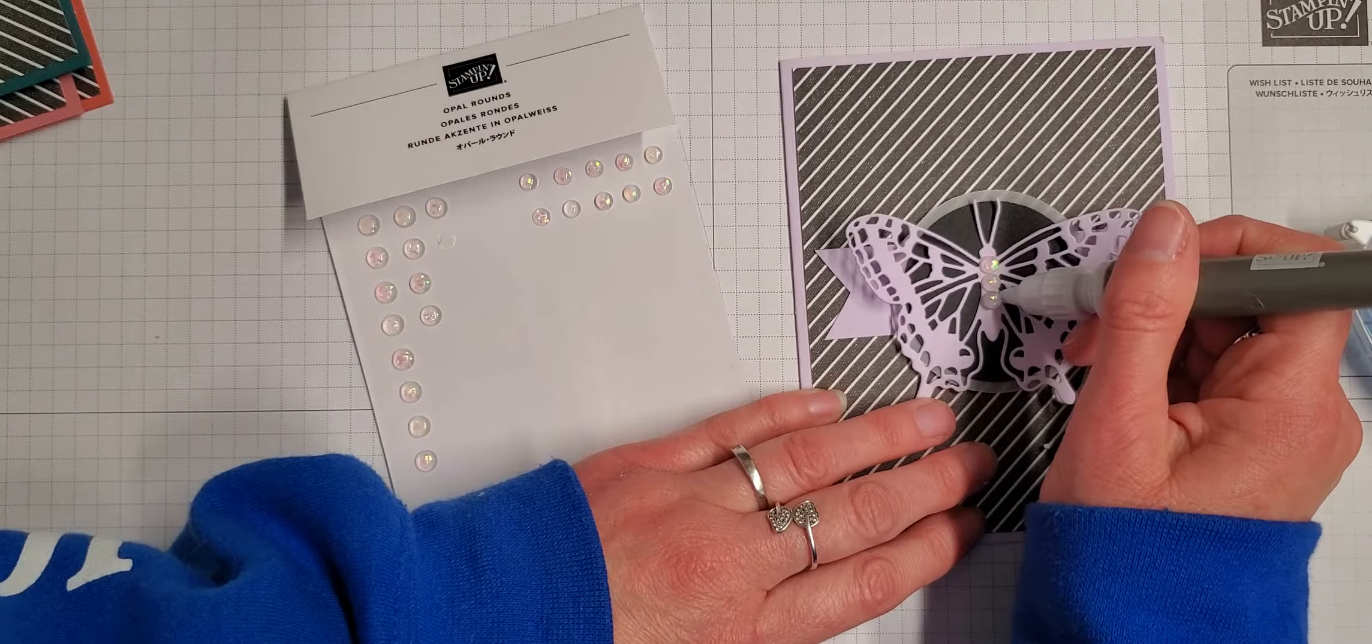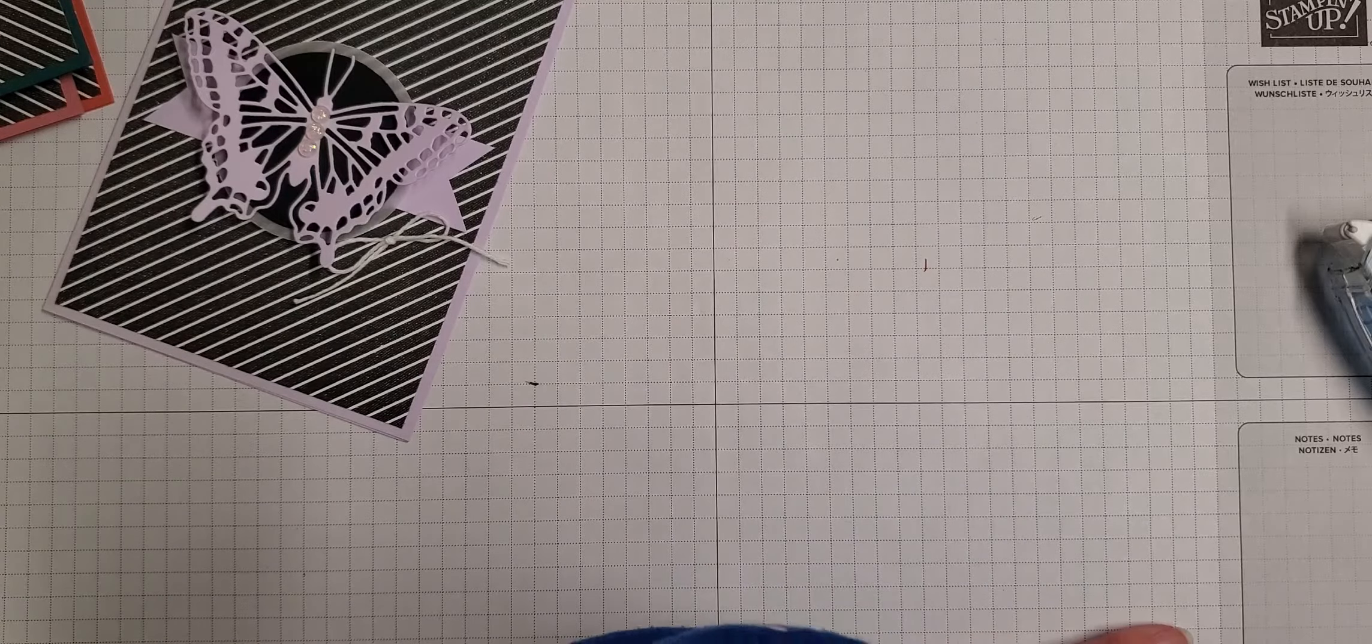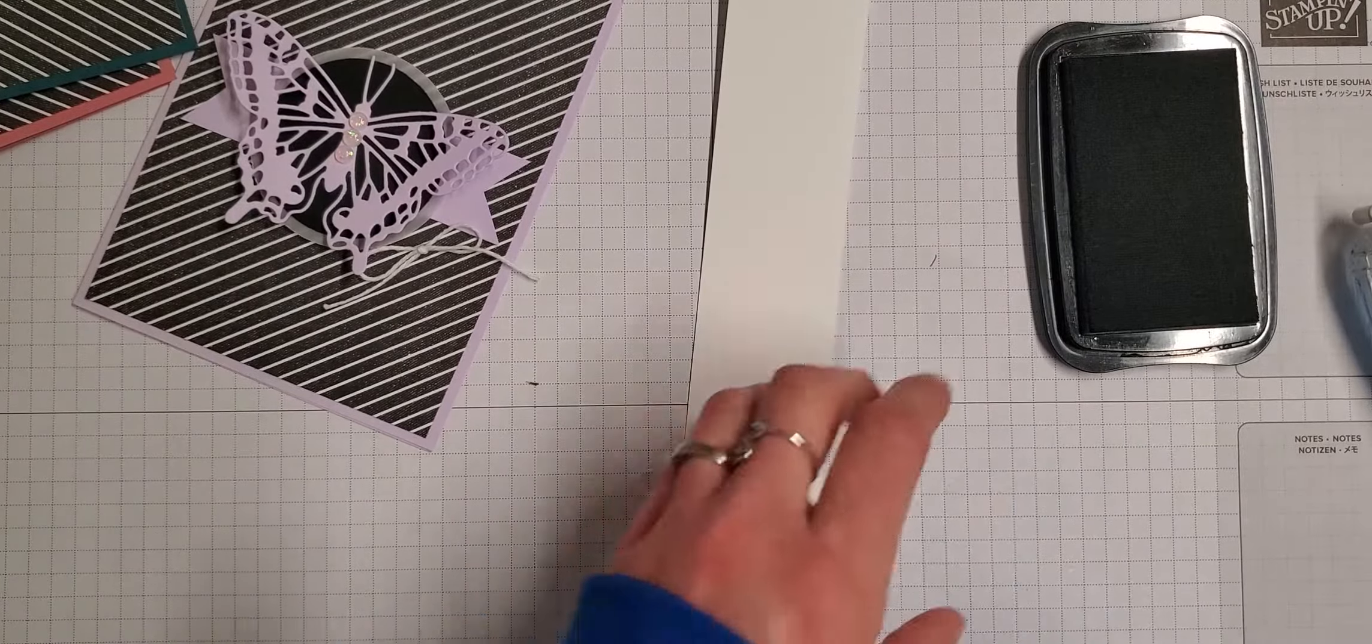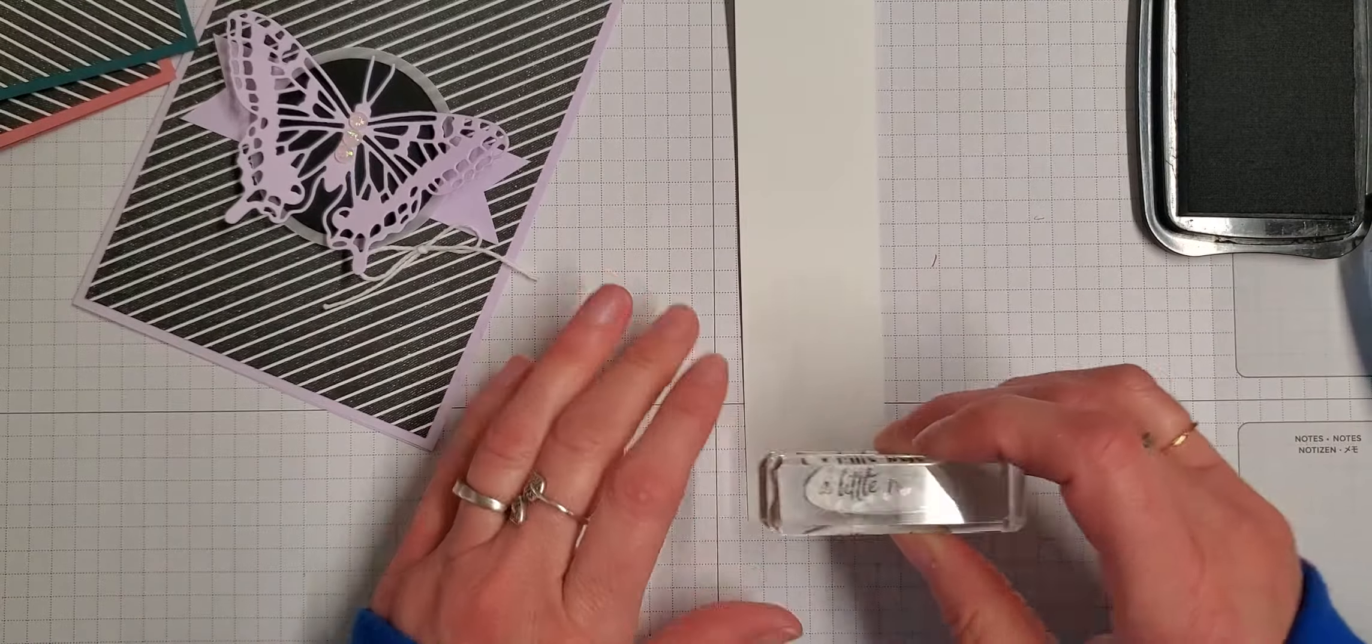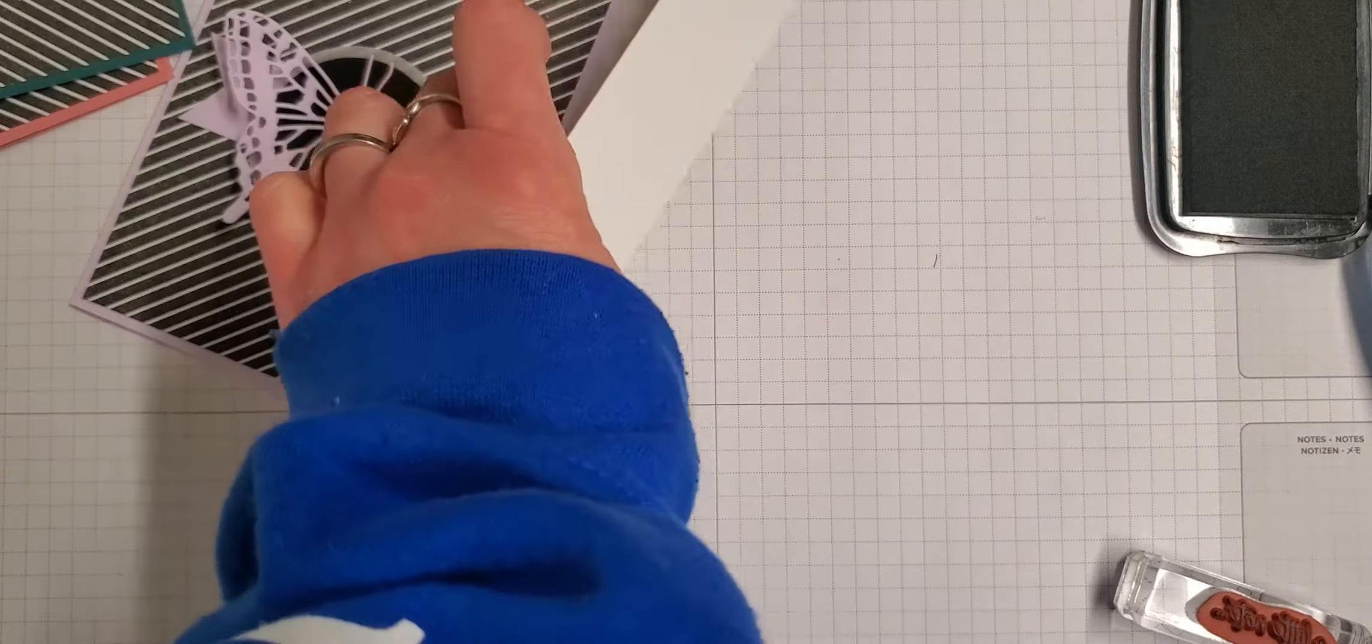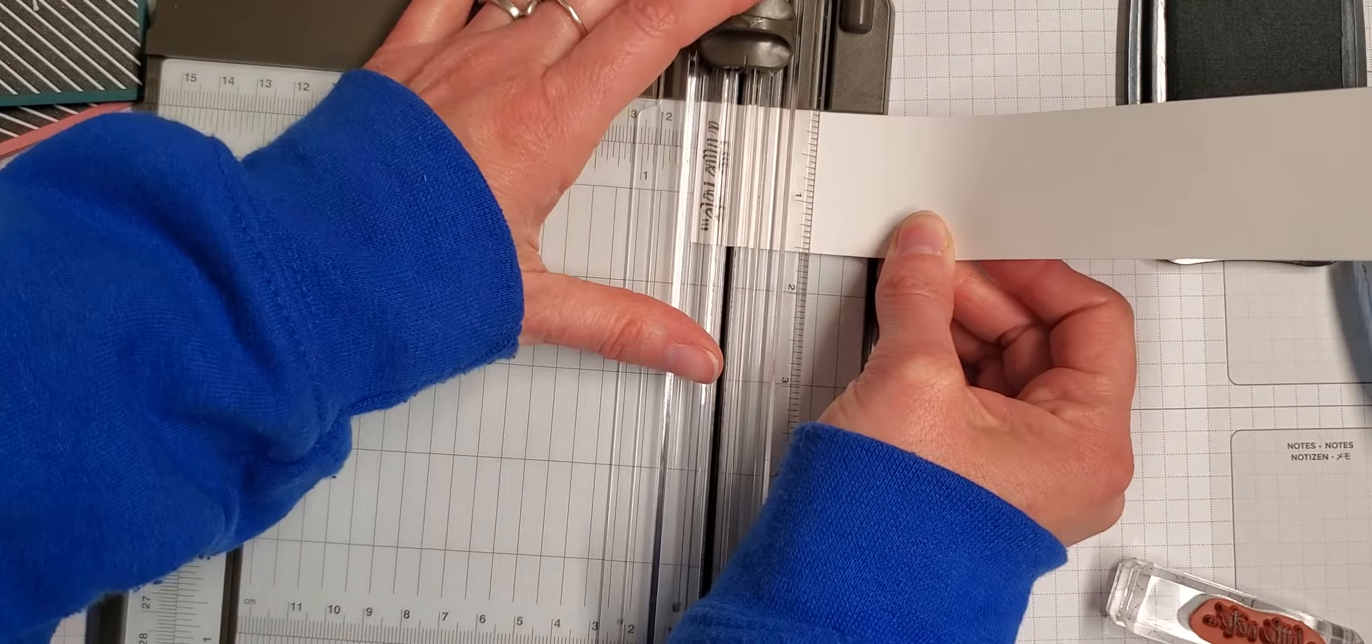And then the last step for these is just to do the little note. So let me grab a piece of Whisper White paper and I have Memento Black ink and I'm using the 'a little note' from Enjoy the Moment stamp set. And then I'm just going to stamp that on the bottom and then I can trim it off.